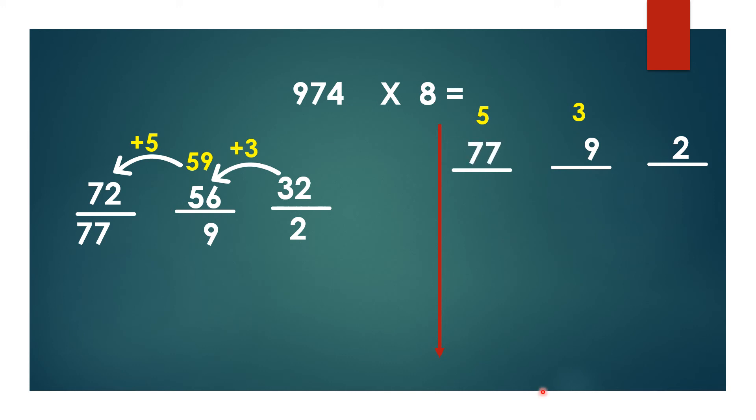8 × 9 = 72, 72 plus 5 is 77. So directly you got the answer 7792. This method enables you to write the product in an appropriate way without any confusion.